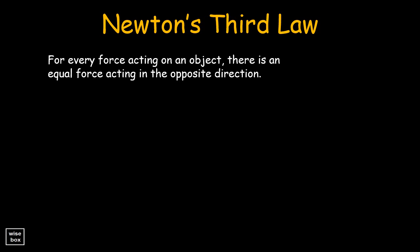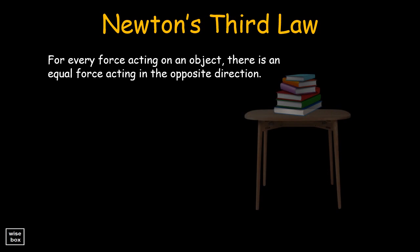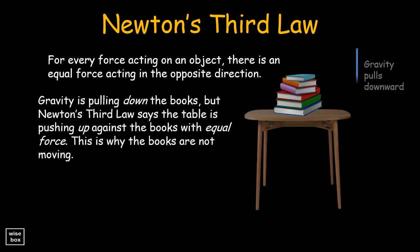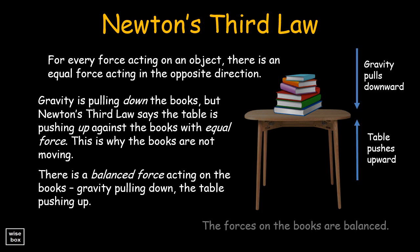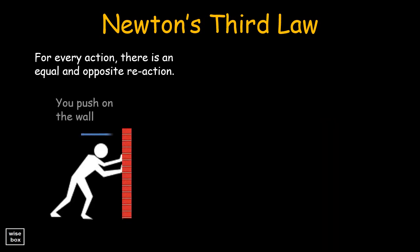Let's look at this illustration. Here is a stack of books placed on the table. The force of gravity is pulling down the books, but Newton's third law says the table is pushing up against the books with equal force. This is why the books are not moving. There is a balanced force acting on the books — gravity pulling down, the table pushing up. When you push on the wall, the wall pushes back with the same amount of force.